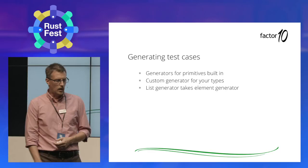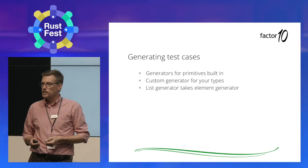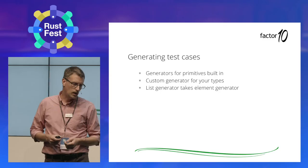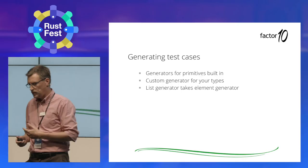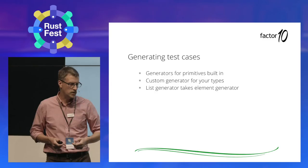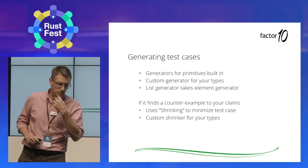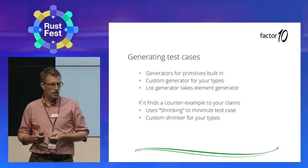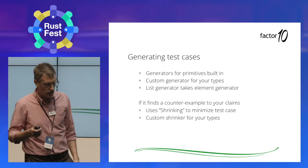How does QuickCheck know how to generate test cases? For primitives, these functions are built in. If you have your own types, you write a custom generator — it's not that hard. If you write a custom generator, QuickCheck automatically knows how to generate a list of such instances. If it finds a counterexample, QuickCheck does something called shrinking to minimize the test case. You can also provide a custom shrinker for your types, but that's seldom necessary.